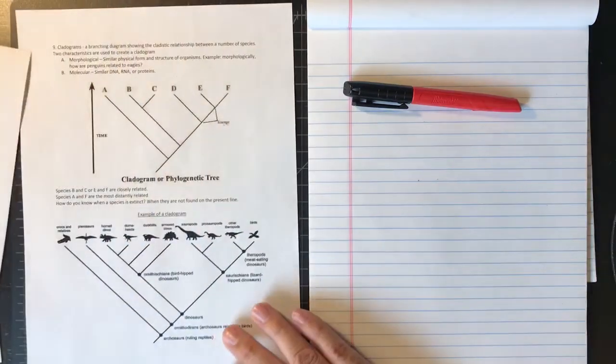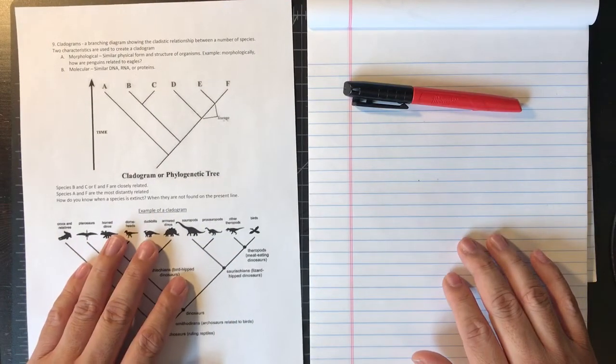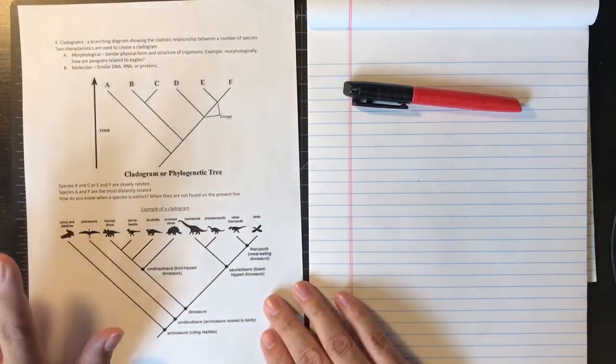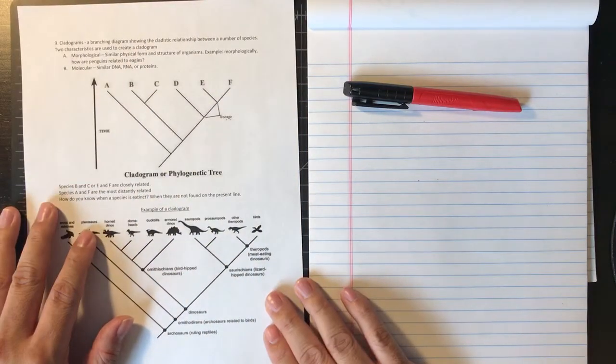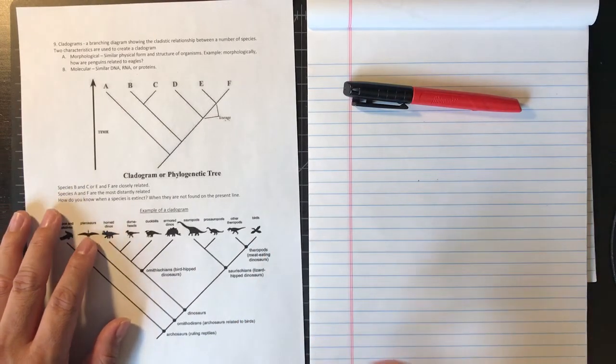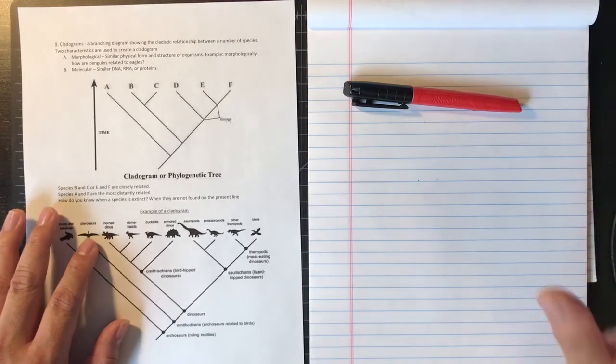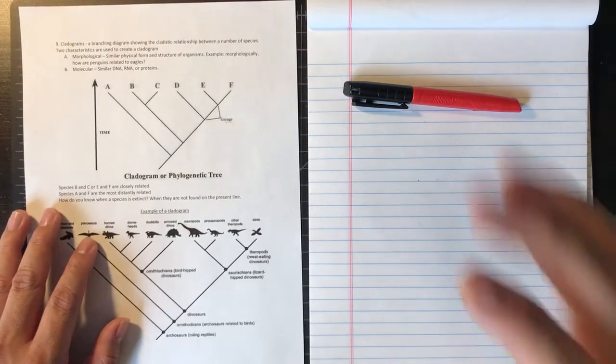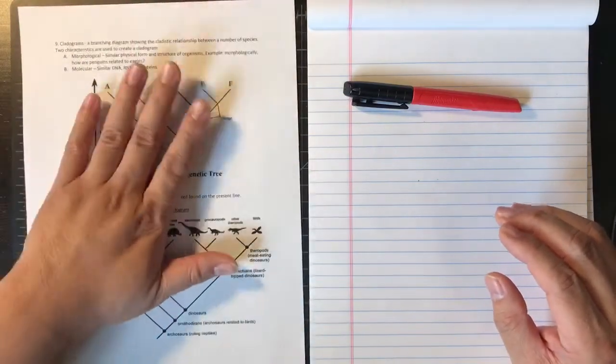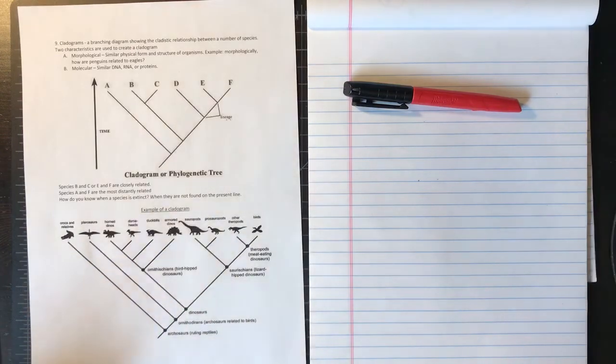So which brings us to cladograms. Cladograms are a diagram, kind of looks like this. We're going to move on. I'm going to stop here. We're going to talk about cladograms in the next part of our segment. So right now what you're going to be doing is you're going to be looking at your packet. I will tell you exactly what questions you need to answer and we're going to continue on with cladograms tomorrow. Okay, bye guys.